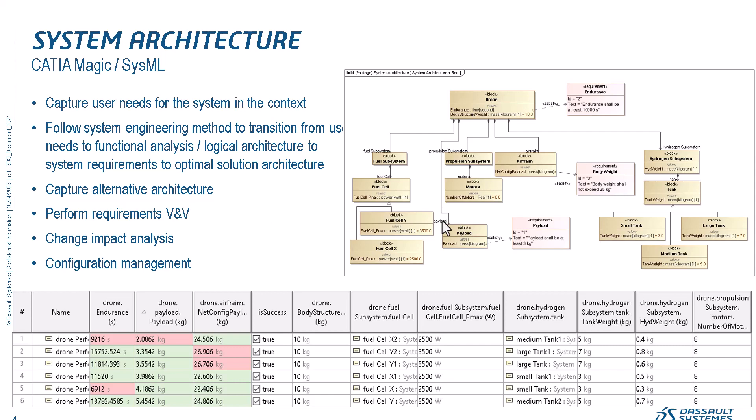We perform requirements VnV — if we have analytical models attached we can do that virtually, as we'll see today. We can do change impact analysis quickly if we have virtual models of the system. We also do configuration management because as we develop the system, we need to know on which baseline we are actually performing analysis.